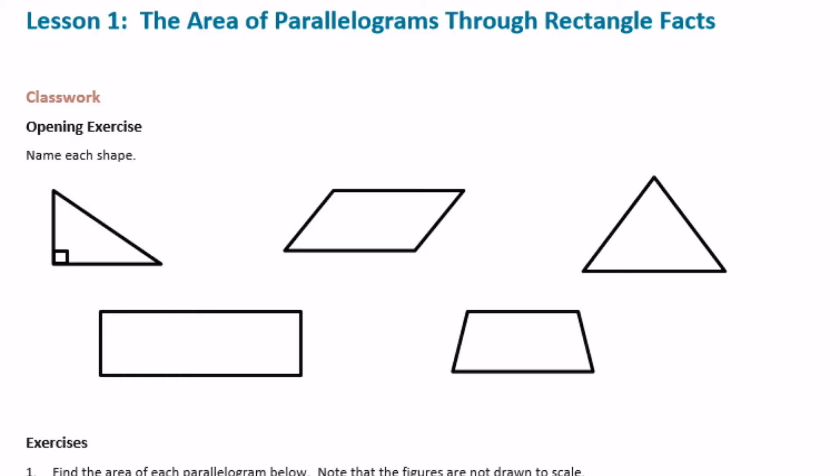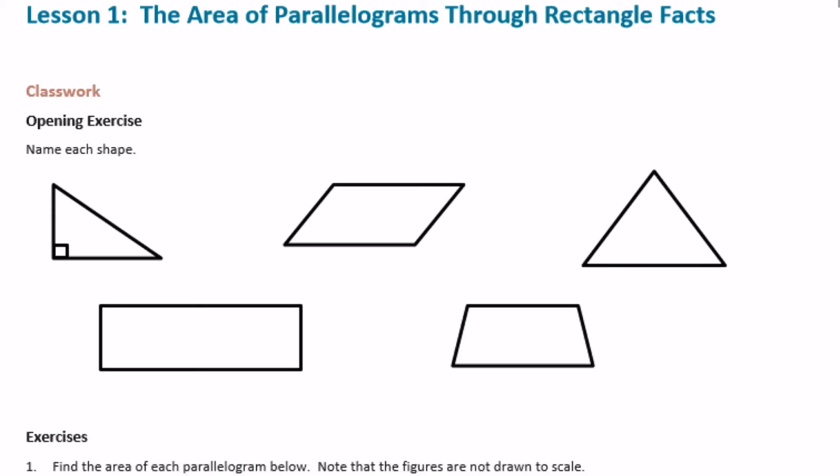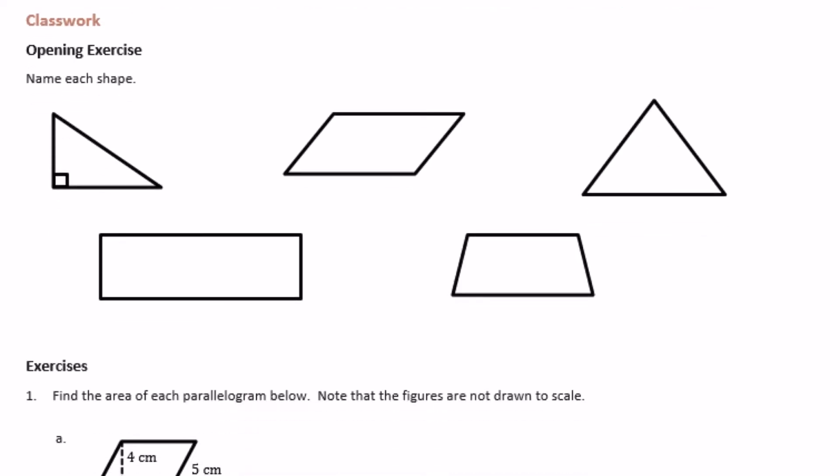6th grade module 5 lesson 1 classwork opening exercise: name each shape. This is just a little review from previous grades about what each of these shapes and their official names are called. Here we have something with three sides, so this is called a triangle, but more specifically it has a right angle in it, a 90-degree angle, so it is called a right triangle.